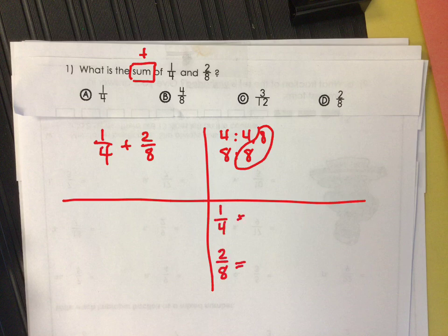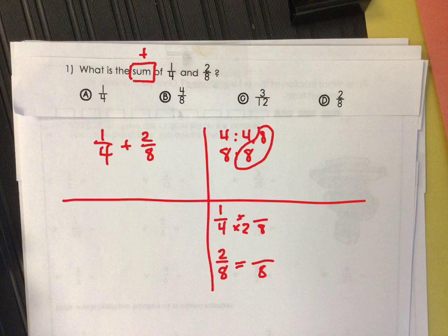We need to make the exchange so my denominator is going to be 8ths. I can ask myself: what did I multiply 4 by to get to 8? So whatever I do to the denominator I have to do to the numerator. So 1 times 2 is 2. And do we really even need to do anything to the 2/8, because it's already an 8th — there's no exchange that needs to be made.